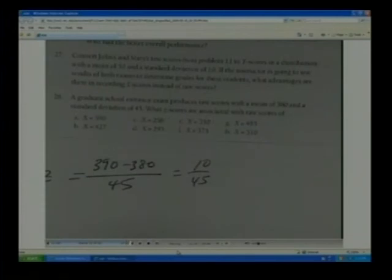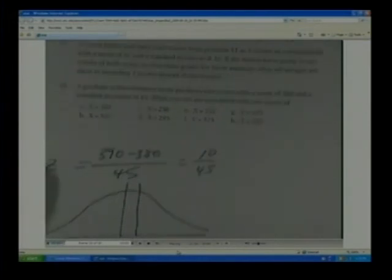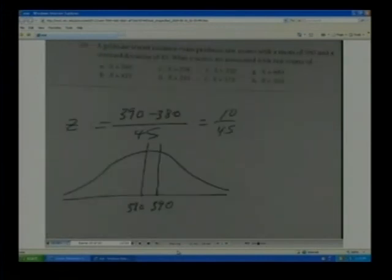I'm going to do the calculations later. So again, the mean is 380, the value we're looking for is 390, the standard deviation is 45. So you can go through and you can see there it is, I didn't show you that earlier, but you can see how those values work out.